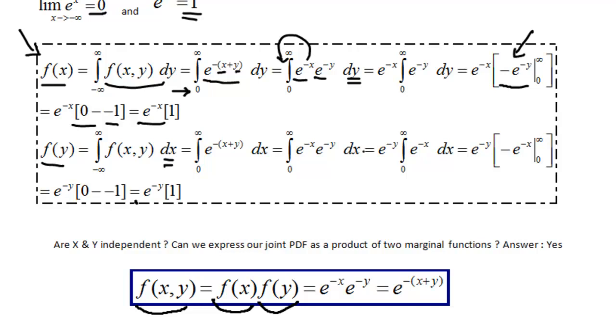We recovered these marginal functions here and here. And when we substitute them, it turns out that it gives us exactly the same expression as our joint PDF. Therefore, we have proven that our variables are indeed independent.